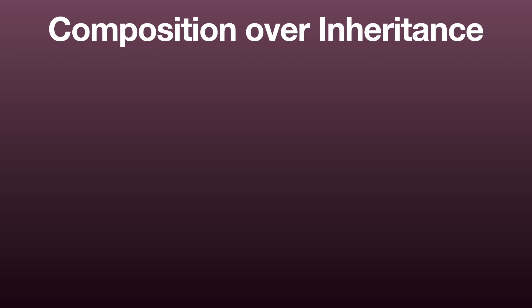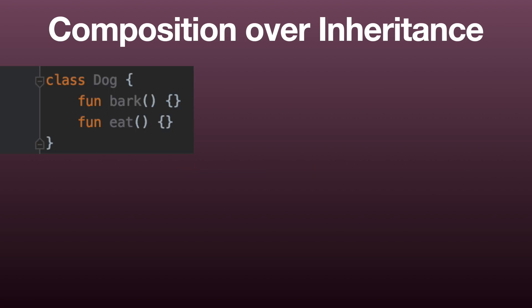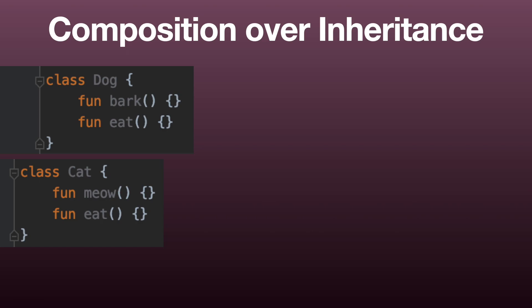In our application for today, the product manager has asked us to create a dog. The dog can bark and eat. And as you can imagine, this would not be a good application if there were no cats. So we were asked to add a cat that can meow and also eat. We can immediately see the duplication in the eat method, and we have been learning that this is bad.